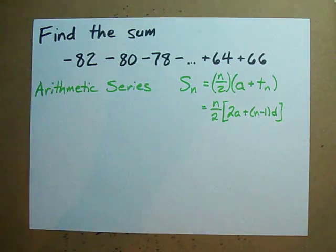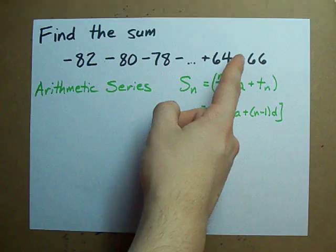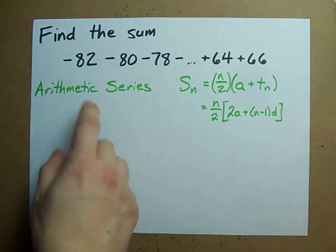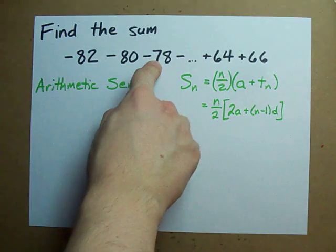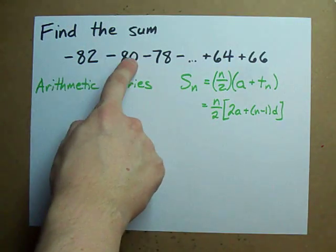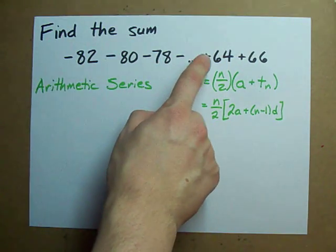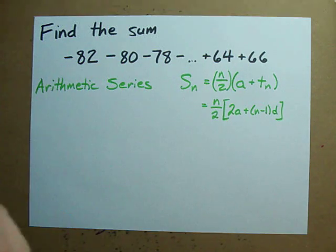Find the sum of this huge monstrosity. It starts with negative 82, then you take away 80, then you take away 78, and there's a pattern to that all the way up until when you're adding 64 and adding 66.